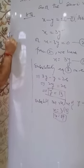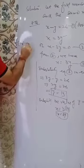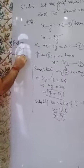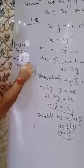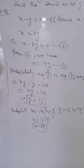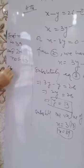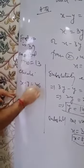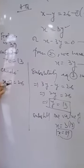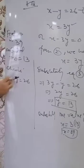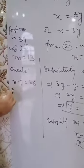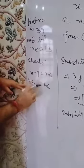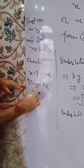Therefore the two numbers: the first number is 39 and the second number is 13. Let us check: X minus Y equals 39 minus 13 equals 26, and 26 equals 26. This confirms our answer is correct.